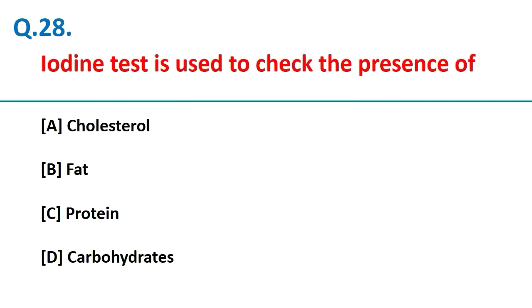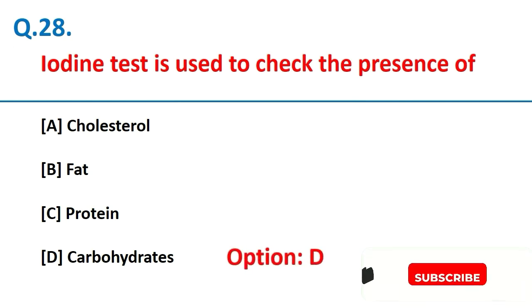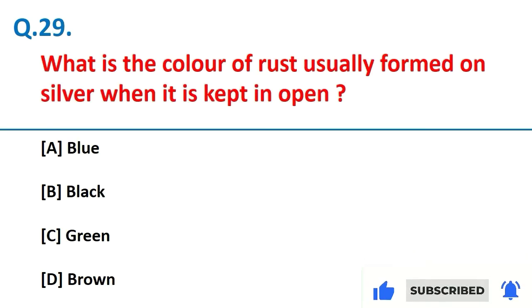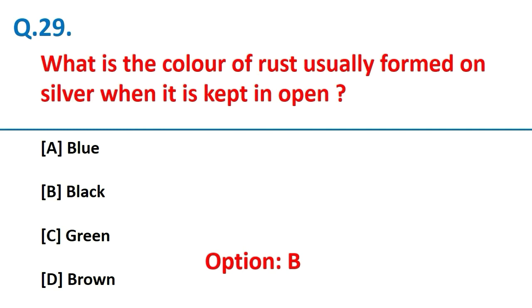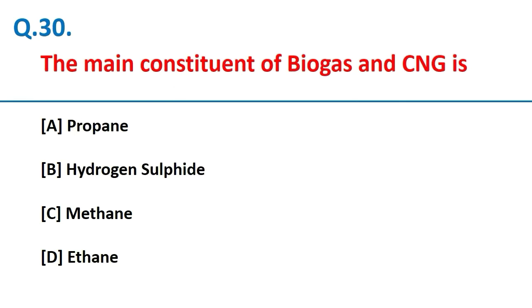Photochemical smog does not contain carbon dioxide. Iodine test is used to check the presence of carbohydrates. The color of rust usually formed on silver when kept in open is black. The main constituent of biogas and CNG is methane.